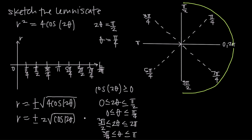Plugging theta equals 0: 2 times 0 is 0, cosine of 0 is 1, square root of 1 is 1, times 2 gives r equals positive or negative 2. We can plot positive 2 and negative 2. Plugging in theta equals pi over 4: 2 times pi over 4 is pi over 2, cosine of pi over 2 is 0, so r equals 0. As we go from 0 to pi over 4, the curve comes back to 0.